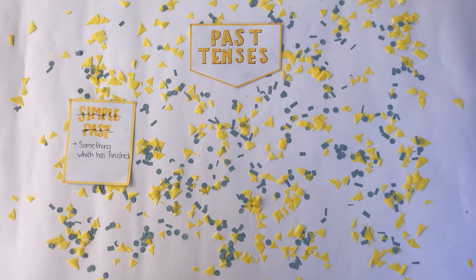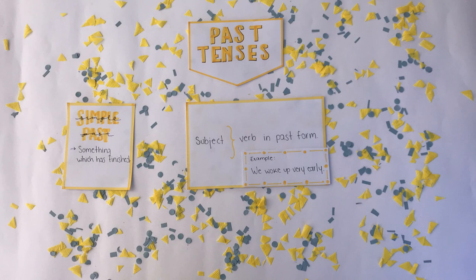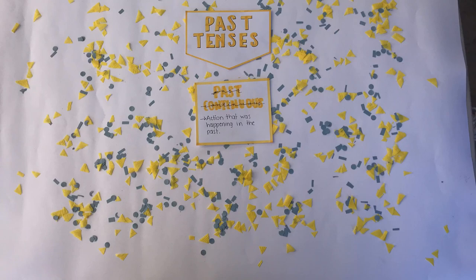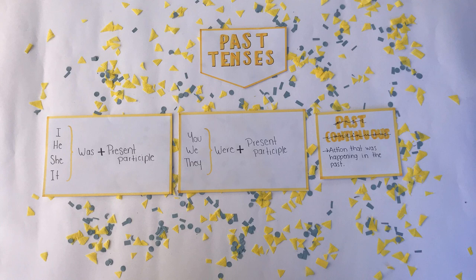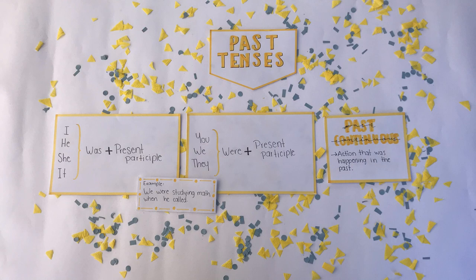Past tenses. Simple past describes something which has finished. We use the verb in past form — for example, we woke up very early. Past continuous describes an action that was happening in the past. We use subject plus was or were and the present participle — for example, we were studying math when he called.